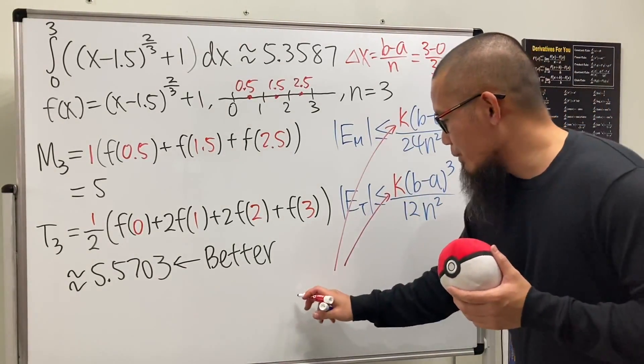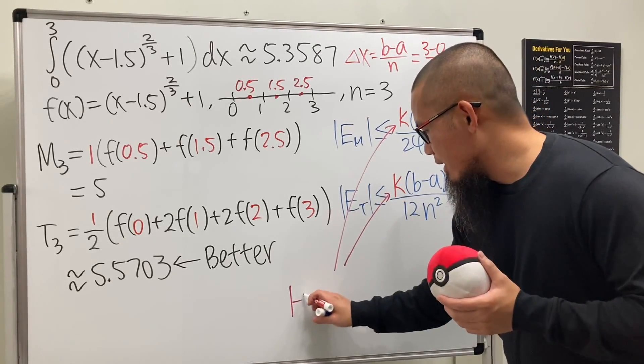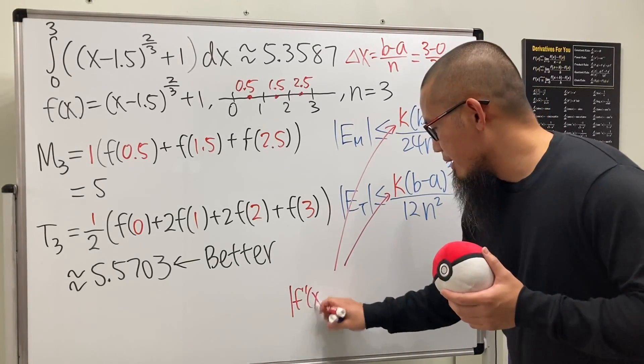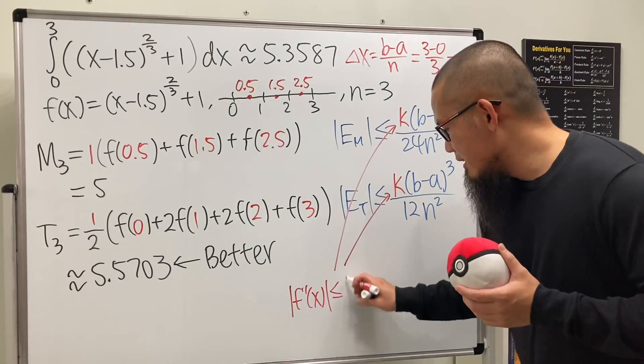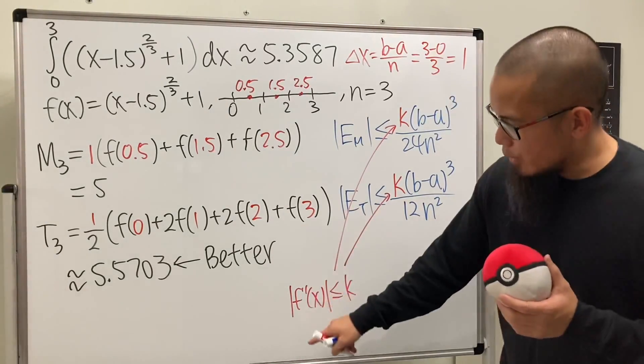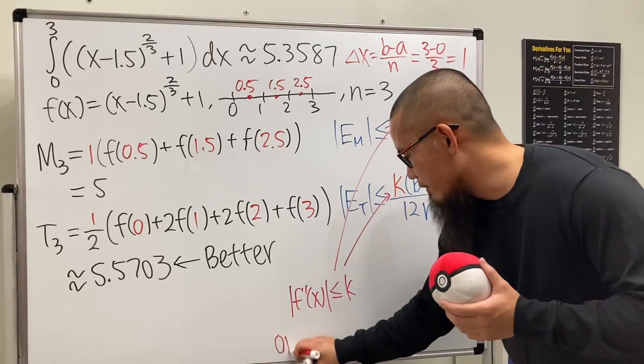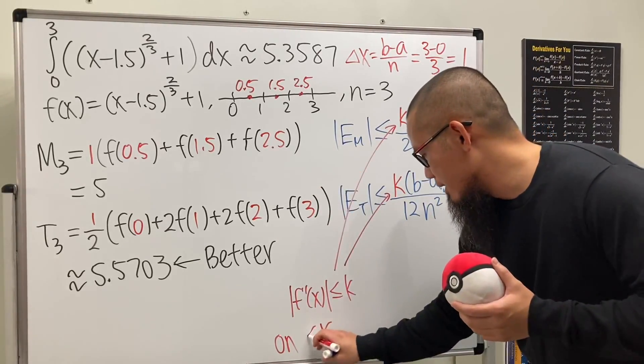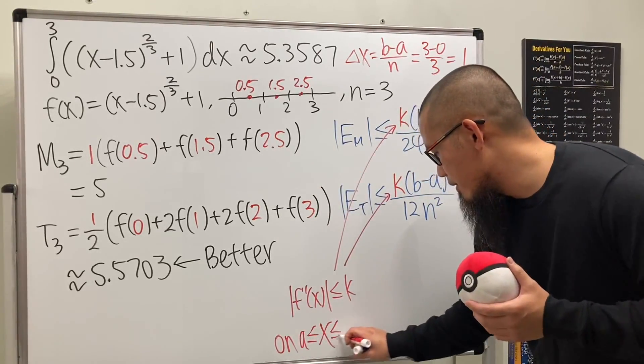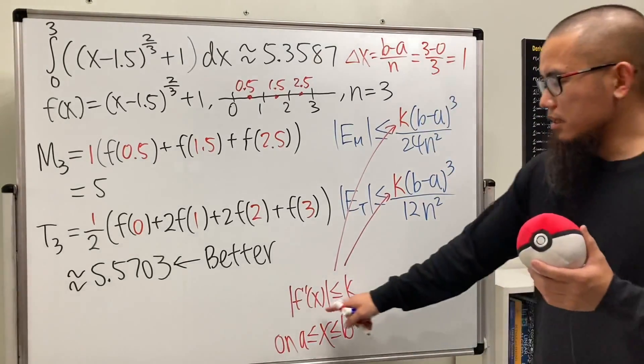Both K values are the same. Remember, K is the maximum value of the absolute value of the second derivative of the function on the interval that we care about, which is [a, b].